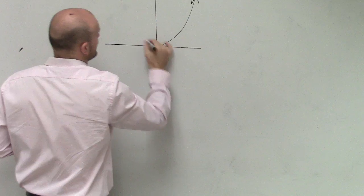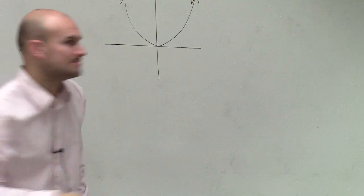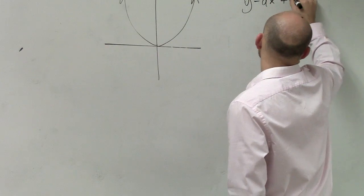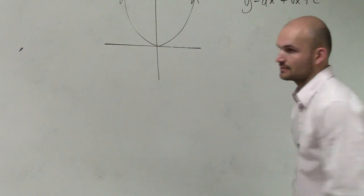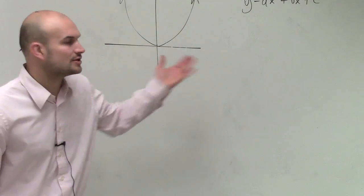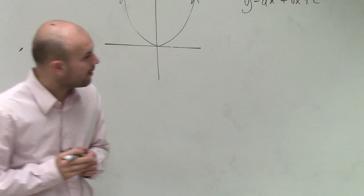And if you remember, we just kind of went through the parent graph. And we said that all parabolas can be written in this form, y equals ax squared plus bx plus c. Right? Kind of your general form. So that is a quadratic equation.